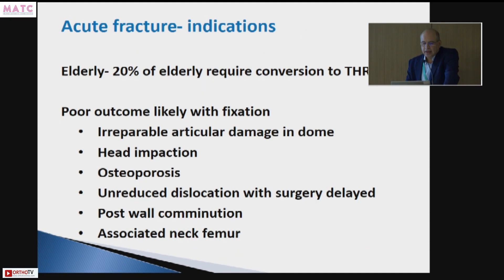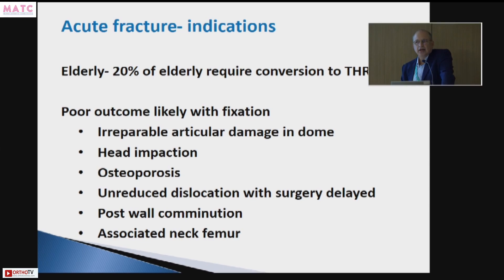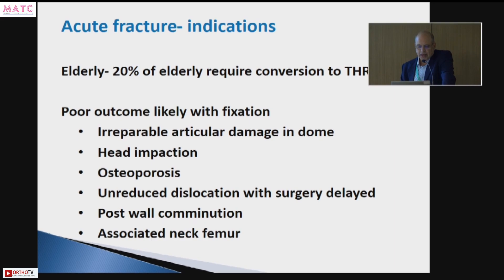In an acute acetabular fracture, converting to a primary total hip requires very selective indication and careful judgment. All of these patients have to be very elderly and additionally the outcome with fixation should be expected to be poor. Factors favoring acute THR include: irreparable articular damage on the head or dome, significant osteoporosis where the implant may not hold, an unreduced dislocation for some time creating high AVN risk, significant posterior wall comminution leading to rapid osteoarthritis development, and an associated neck fracture.